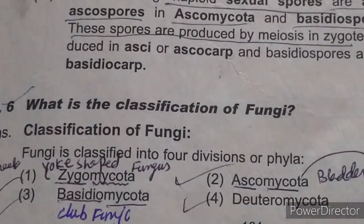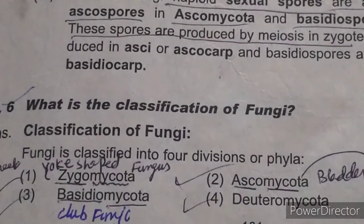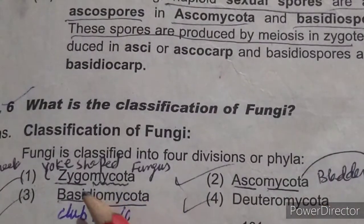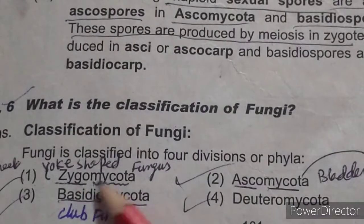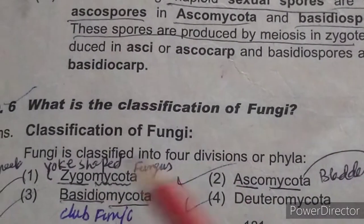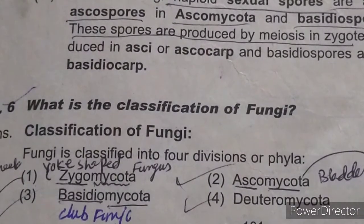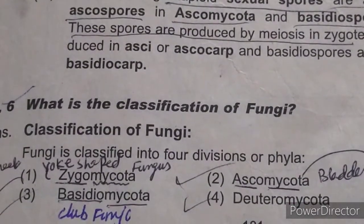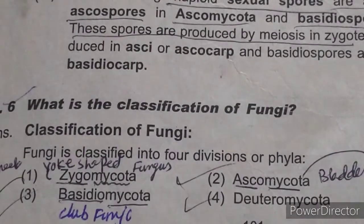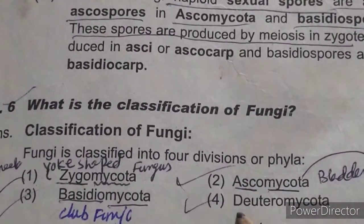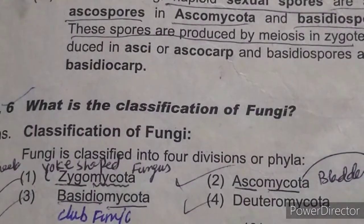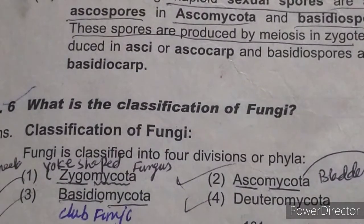Next is Deuteromycota. 'Deutero' means second — this type of fungus is placed in a second category. Now note: Zygomycota produces zygospores, Ascomycota produces ascospores, Basidiomycota produces basidiospores, and Deuteromycota produces deuterospores. So the names of the spores correspond to the names of the groups.